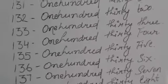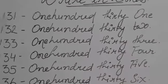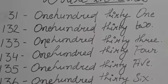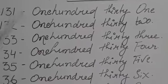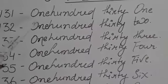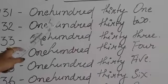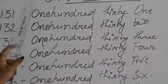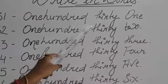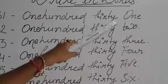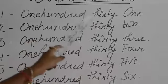Okay, first 131. The spelling of 131 is O-N-E, 1, H-U-N-D-R-E-D, 100, T-H-I-R-T-Y, 30, O-N-E, 1. 131.